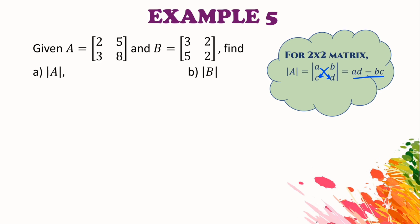Let us take a look at Example 5. Given matrix A = [2, 5; 3, 8] and B = [3, 2; 5, 2], find a) |A|, and b) |B|.